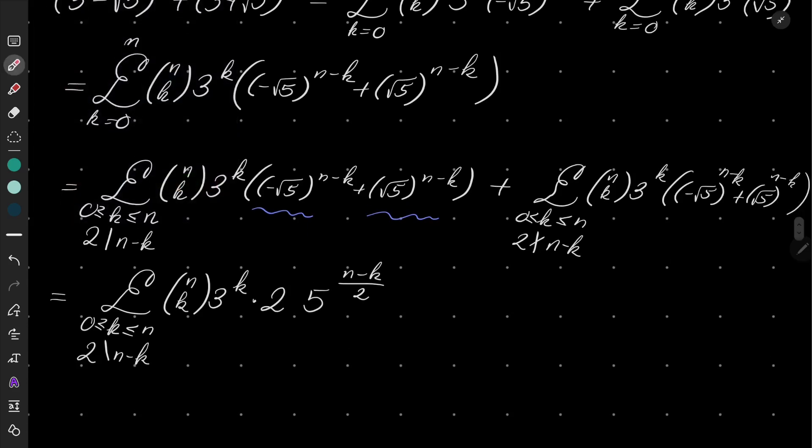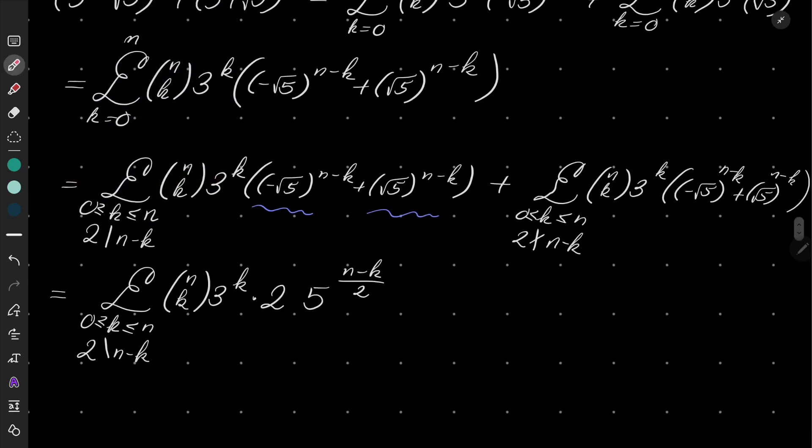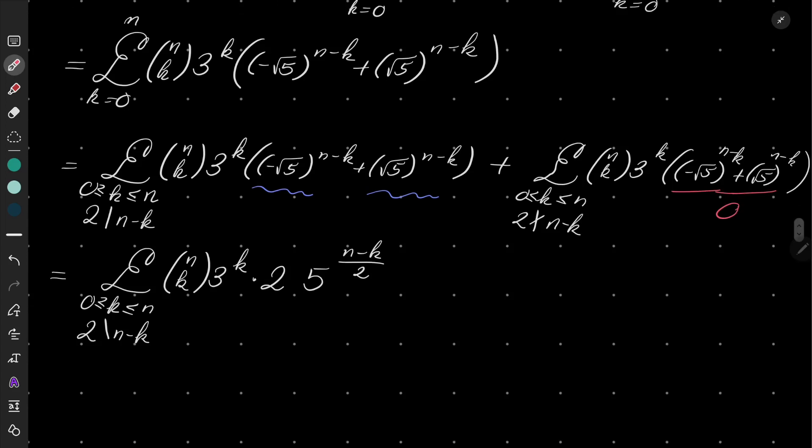And what happens to the other sum? Well, since our exponents are odd numbers, these numbers are opposite. So after adding them, we get 0. So the second sum disappears completely. And because we see that we have 2 here, we can put this 2 in front of our sum.